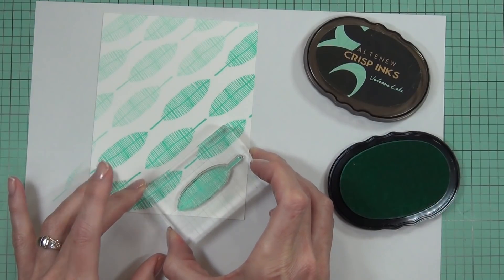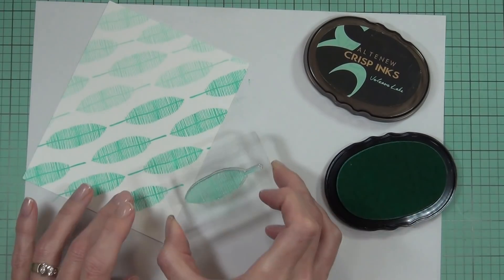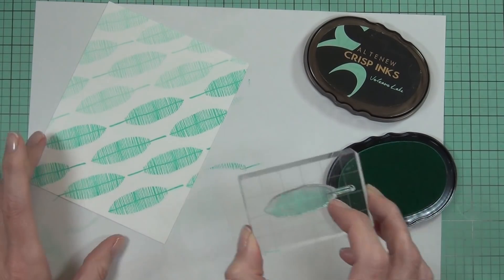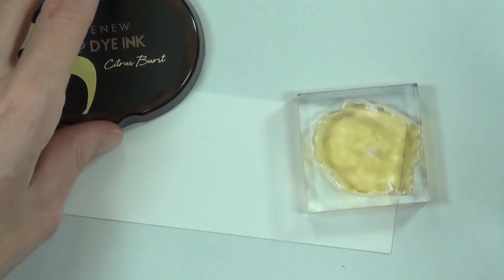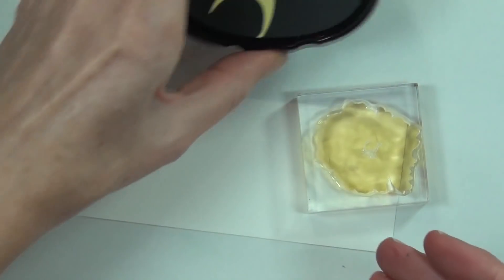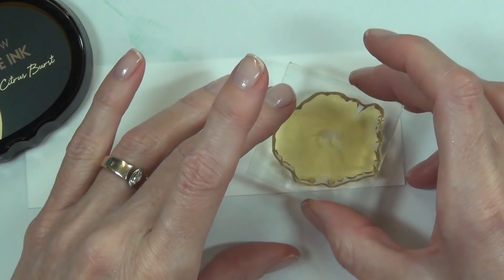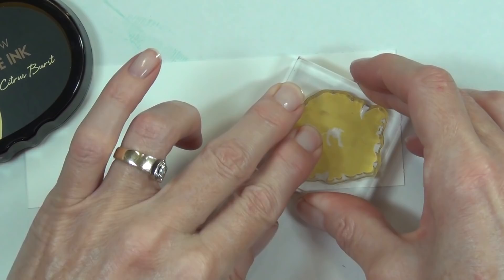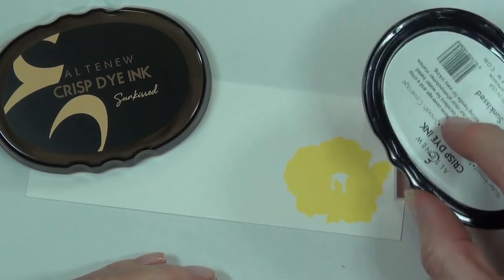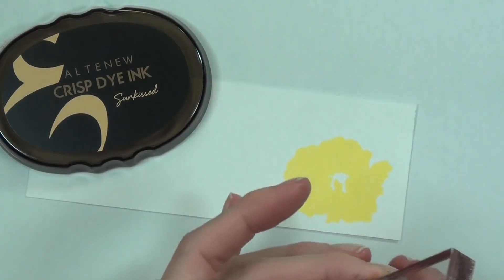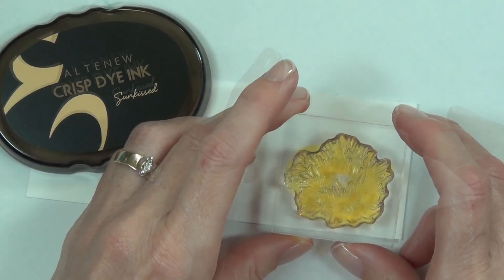It was a very easy panel to stamp out, took no time at all. Probably took me longer to edit it than to actually stamp it. Now I'm going to create my flowers to go on the panel. This is the focal point of my card, using the set created for the Essentials by Ellen range with Altenew. It's a collaboration set called Poppy Field.